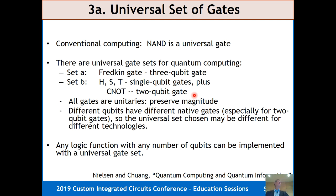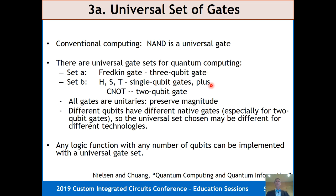The third criterion: a universal set of gates. With CMOS, a NAND gate is universal — you can create any circuit from NAND gates. With quantum computers, it's the same. We use single-qubit gates and a two-qubit gate called a controlled-NOT (CNOT), which is like an exclusive OR. With single-qubit and two-qubit gates, you can do any logic function with any number of qubits. That's been proven. All these gates are unitaries — performing a single-qubit operation always keeps the state on the surface of the Bloch sphere.